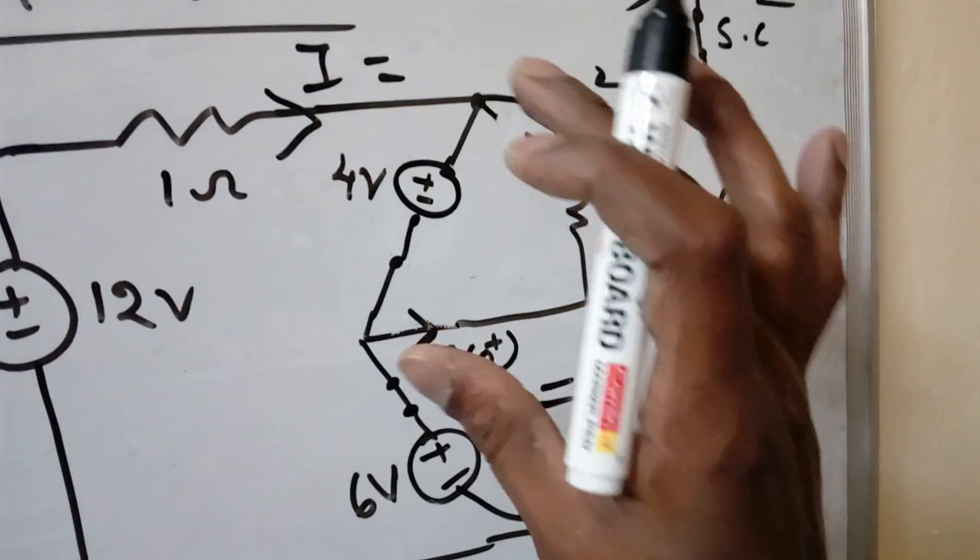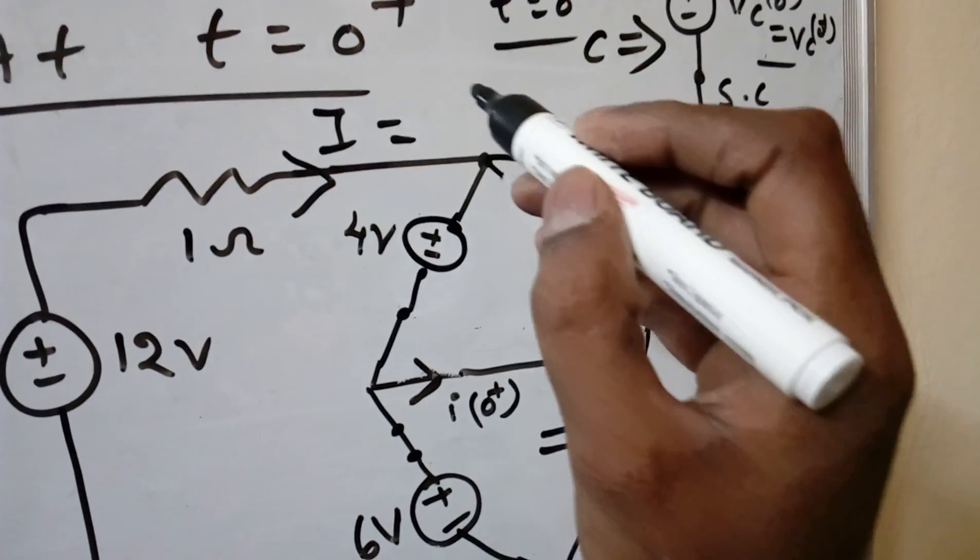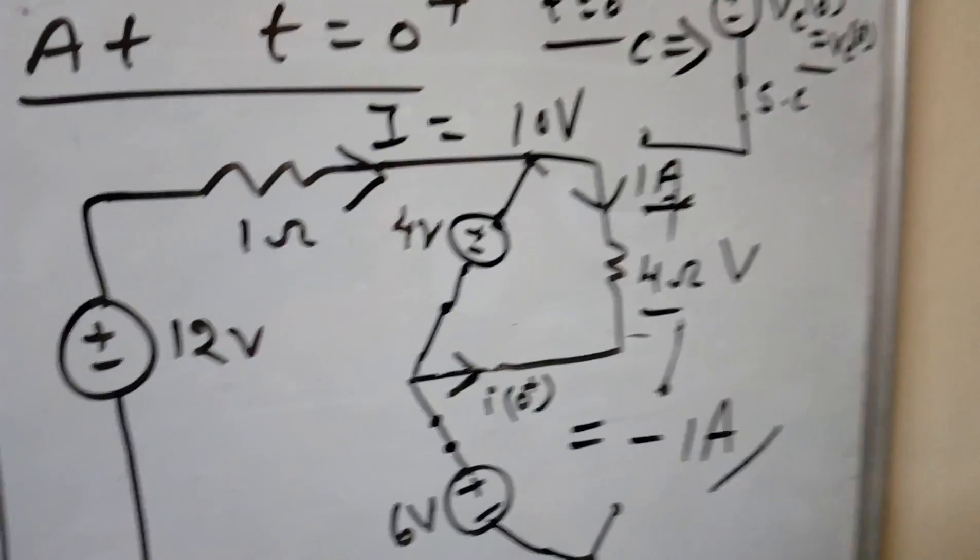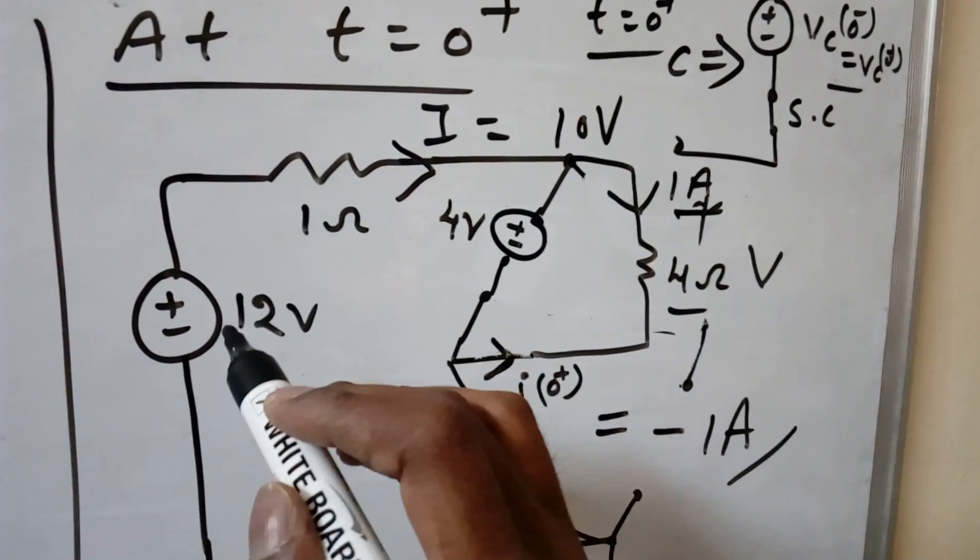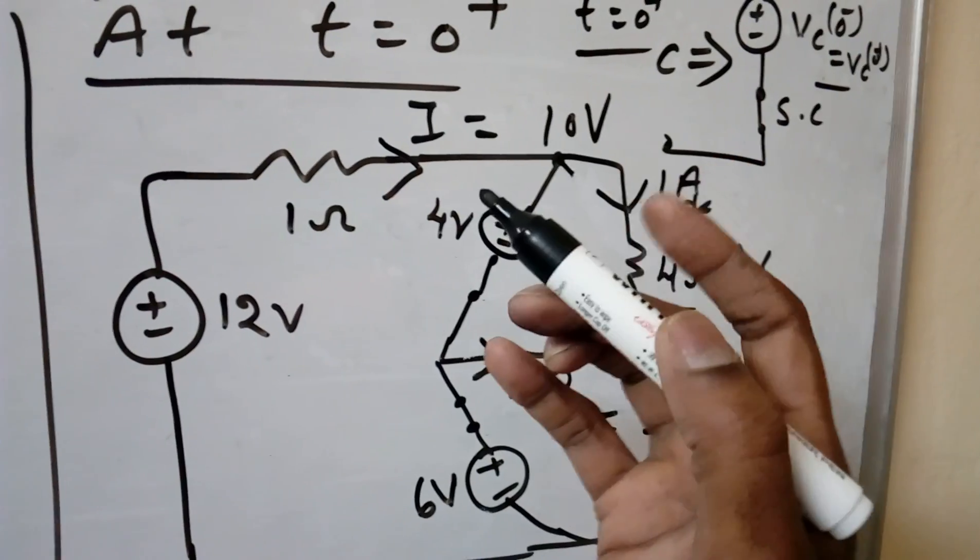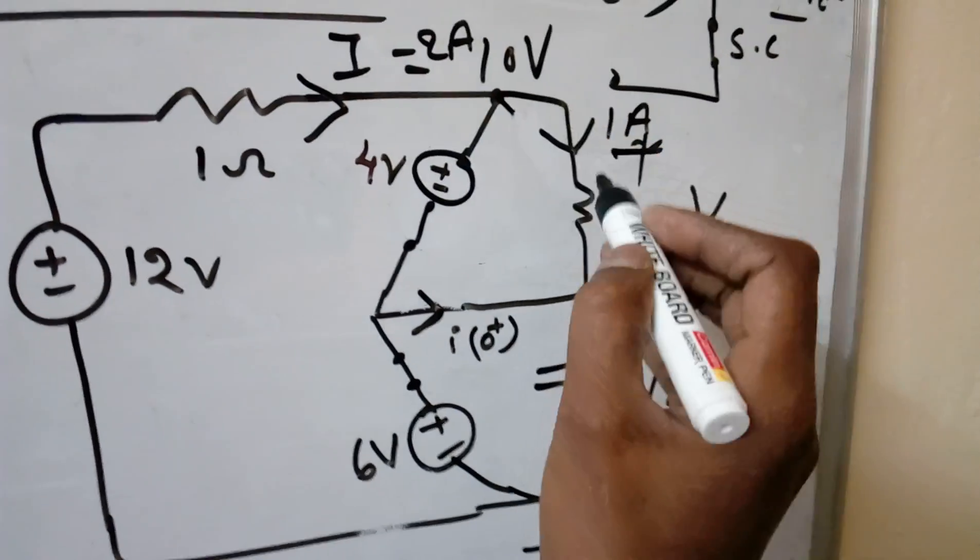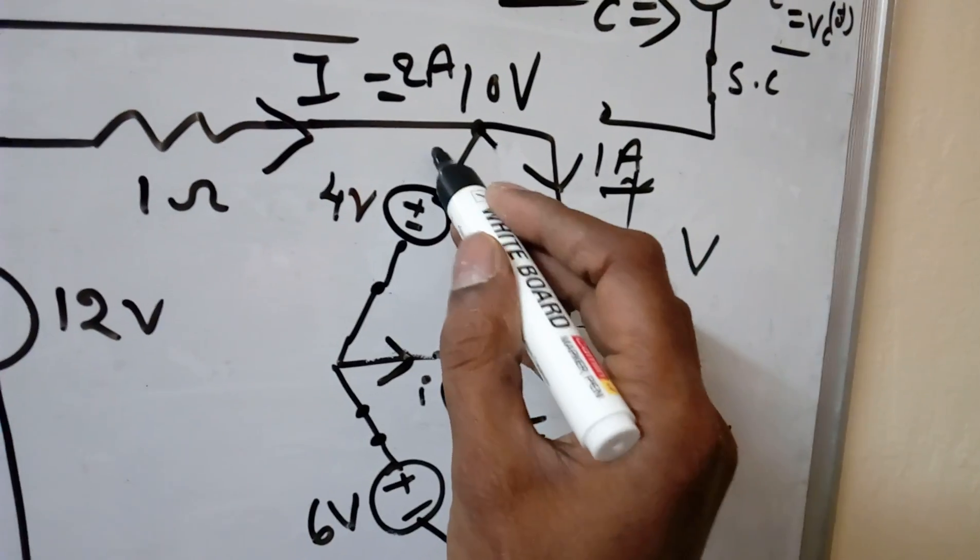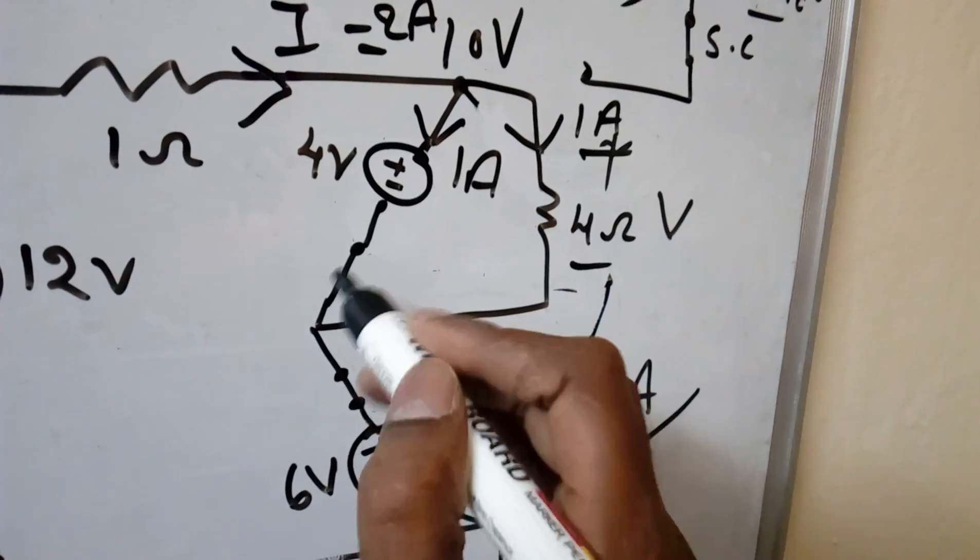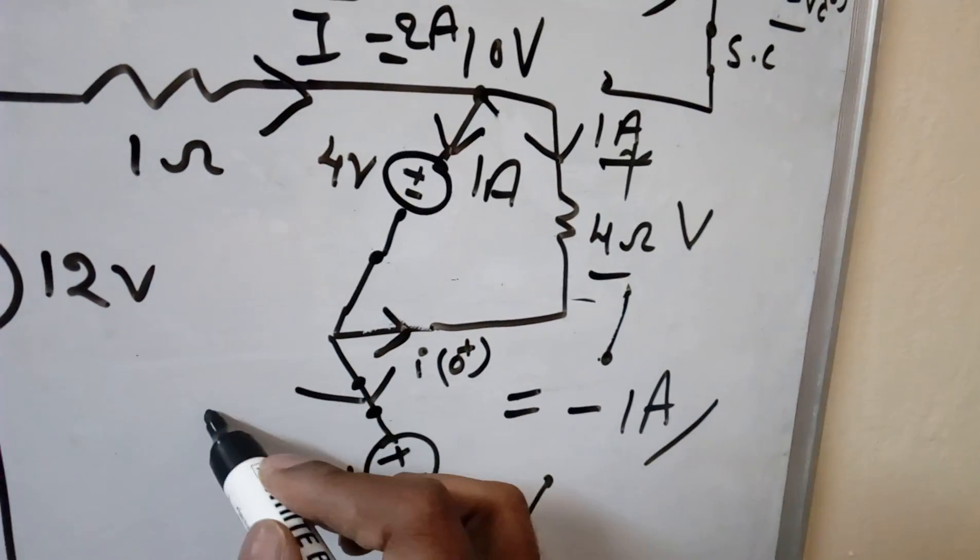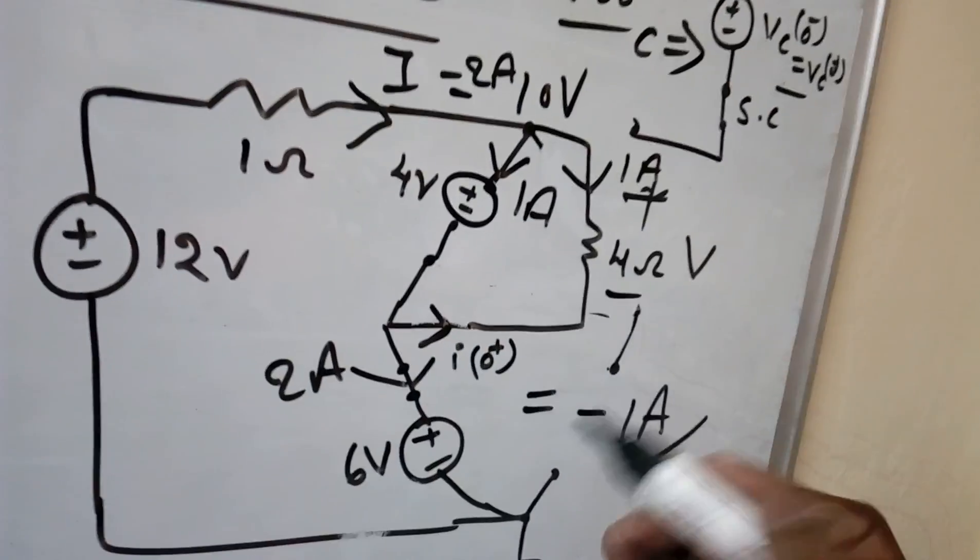Now see this is 4 volts and this is 6 volts. That means what is the overall voltage across this branch? It is nothing but directly 10 volts. Now I know this voltage, I know this voltage. The voltage difference is 12 minus 10, that's 2. 2 by 1 ohm is nothing but 2 amperes. Now already we found this is 1 ampere. So the remaining current, 1 ampere, will go here. So 1 ampere is coming here and 1 ampere is coming here. Then what is the total current here? It is 2 ampere. So the 2 ampere is coming again here. So we can find any current.